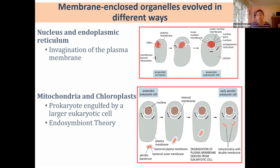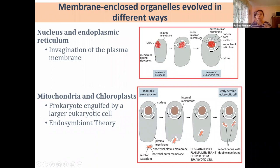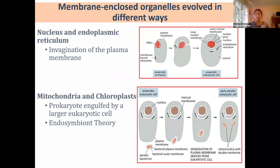How did these membranes evolve — how did they actually come into being? There are two different categories of organelles based on how they evolved. The first is the endomembrane system — the set of membrane organelles that are essentially part or extension of your plasma membrane. The original cell, which was an anaerobic archaea, would have had no membrane-bound organelles — just a single plasma membrane, which provided enough surface area for all the cell's needs.